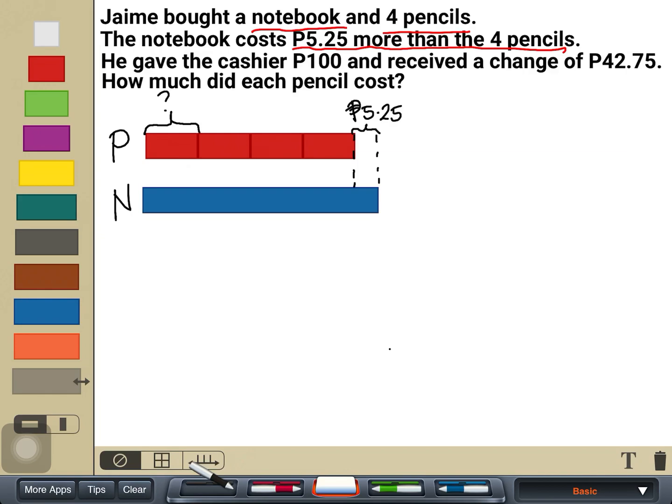We have to know first how much Jamie paid for all these items, the four pencils and one notebook. And we would know that by looking for this. It says that he gave the cashier 100 and received the change of 42 pesos and 75 centavos. So therefore, the cost or the amount of these items is the difference of the money he paid and the change he received.